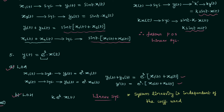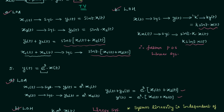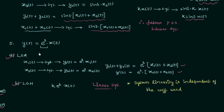Now let's talk about the time invariant and time variant property of the two systems. In the first system the coefficient is sin(t), which is dependent on time, so the system is time variant because for time invariancy the coefficient must be constant. Since sin(t) is a function of time, the system is time variant and linear. In the fifth problem the coefficient e^3 is not a function of time, therefore that system is time invariant in nature. So you can directly comment about the property of the system if you know these important conclusions.